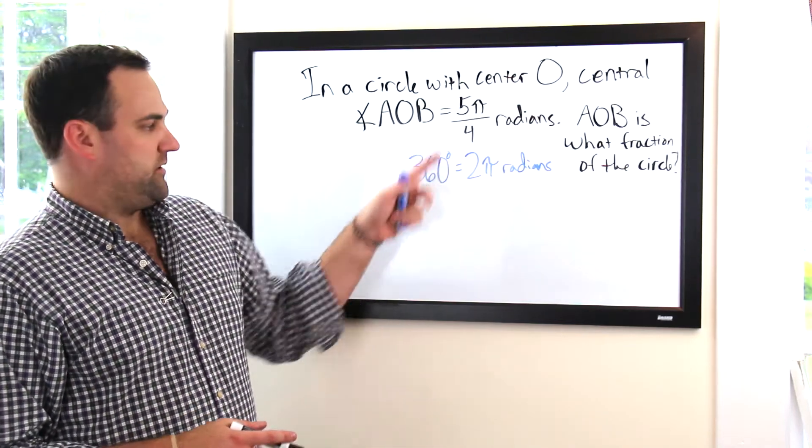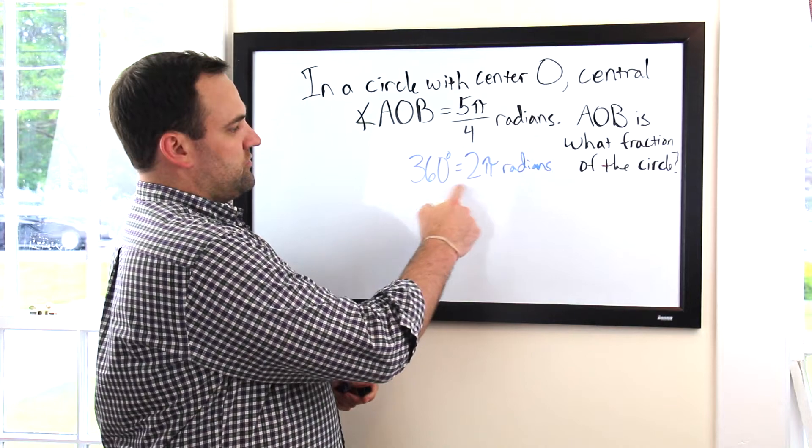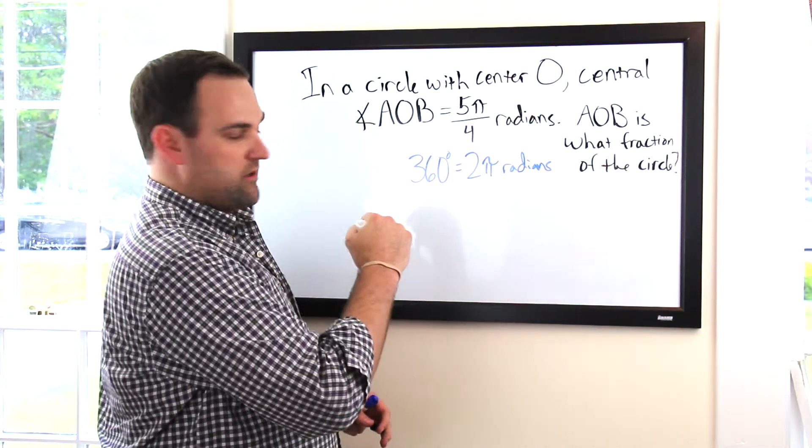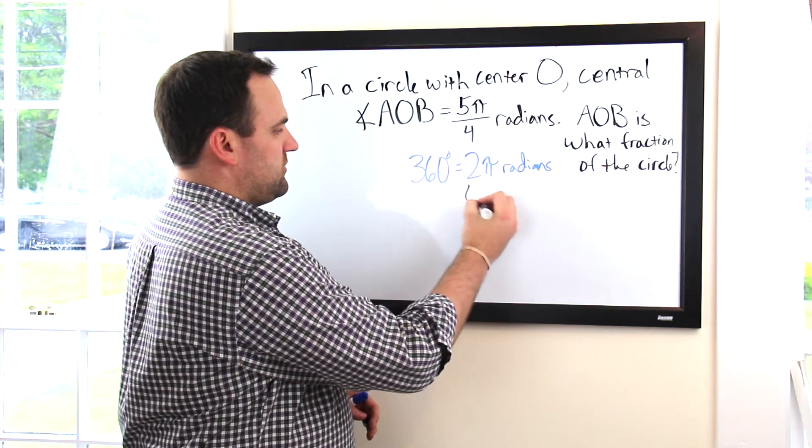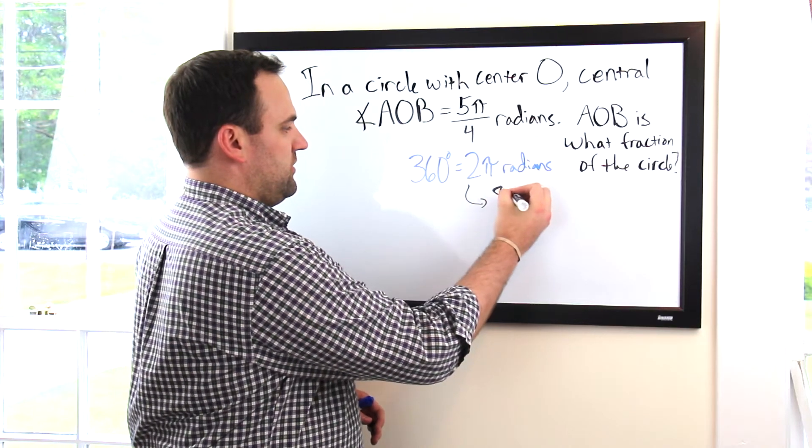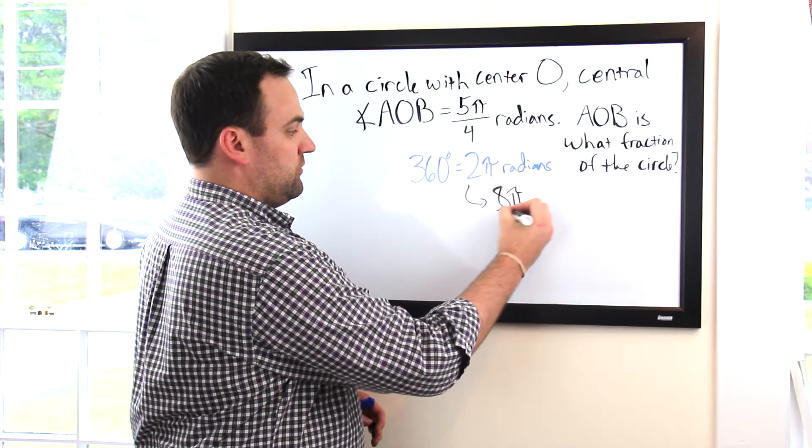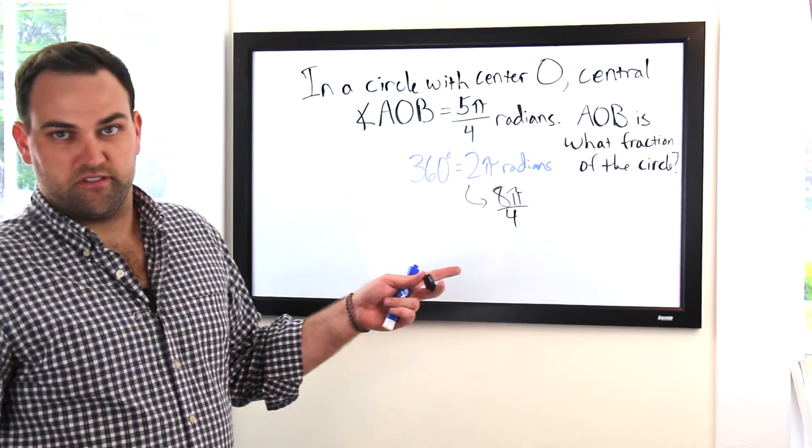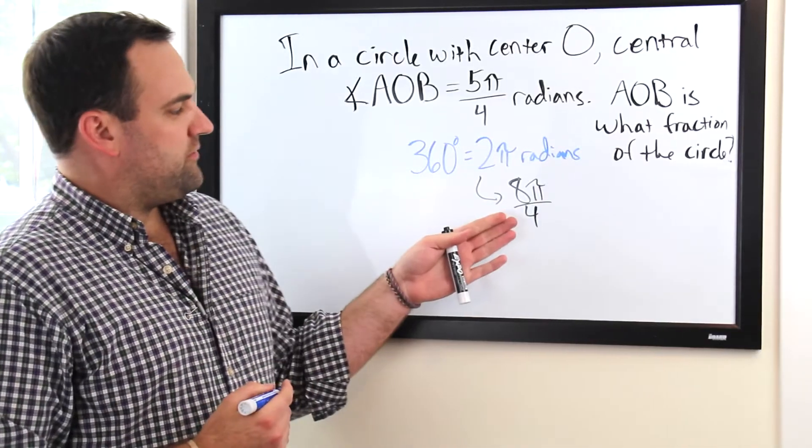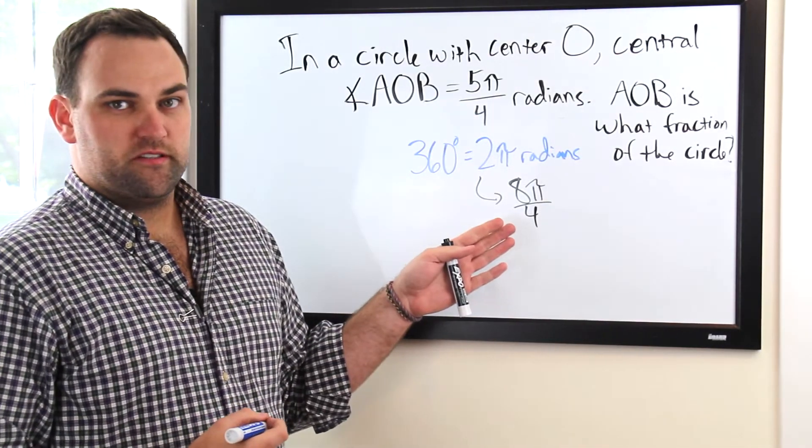So 2π radians, if we want it with our denominator of 4, it's going to be equal to, now we have 8π over 4, since that reduces to 2. Alright, so now that we have a common denominator, we can compare these two.